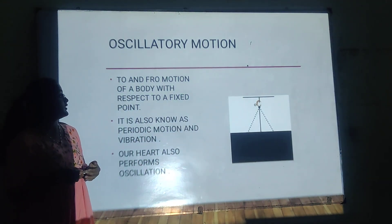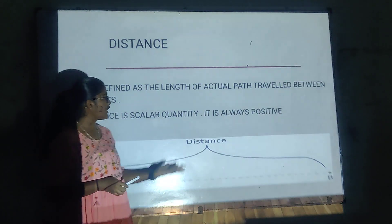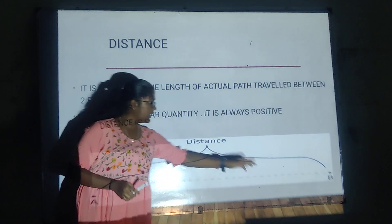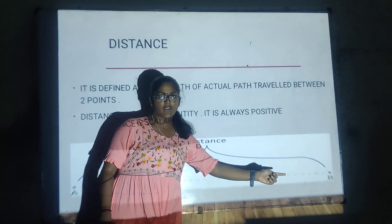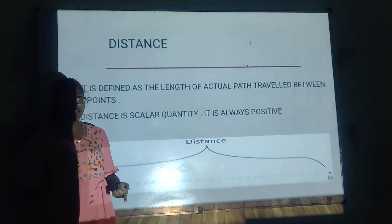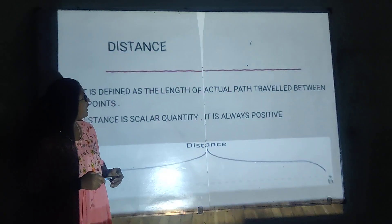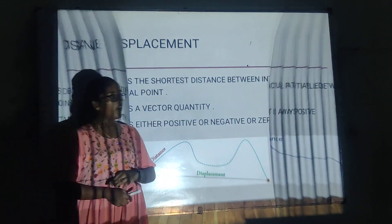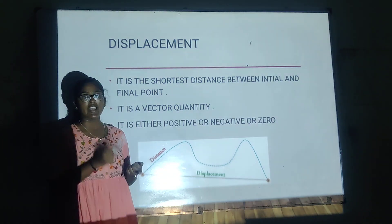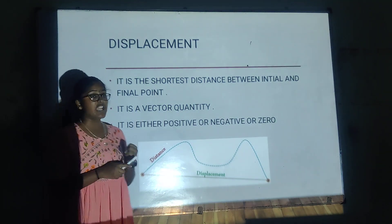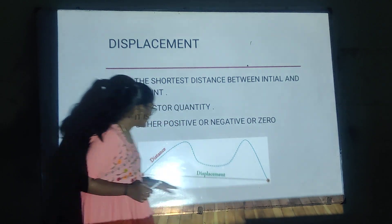Now let us see what is distance. It is defined as the length of the actual path travelled between two points. The initial point to the final point gives the actual distance. It is a scalar quantity since it has only magnitude, and it is always positive. Displacement is the shortest distance between the initial and final point. It is a vector quantity because it has both magnitude and direction. It can be positive, negative, or zero.